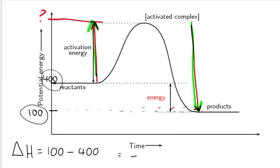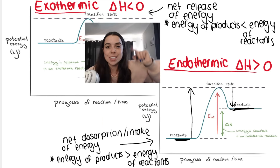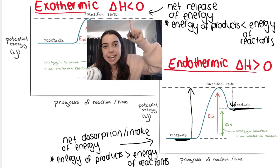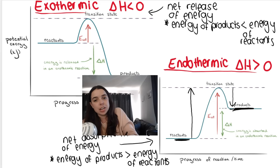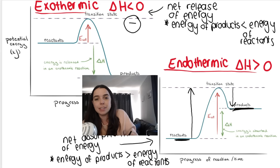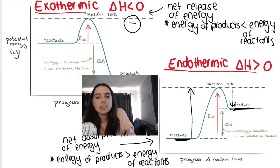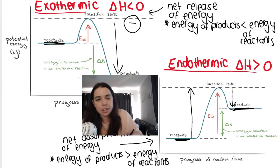We get a negative change in enthalpy — remember, the unit is kilojoules per mole. That negative has significance: it can help us classify the reaction as either exothermic or endothermic. Exothermic reactions have a change in enthalpy less than zero — in other words, a negative delta H — because their products have a lower energy than their reactants. There is a net release of energy.